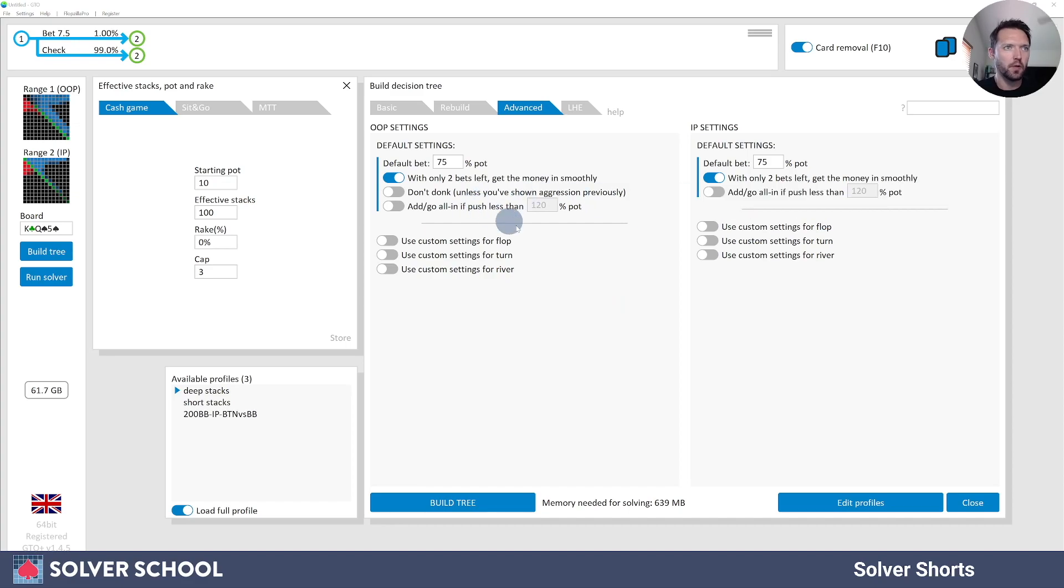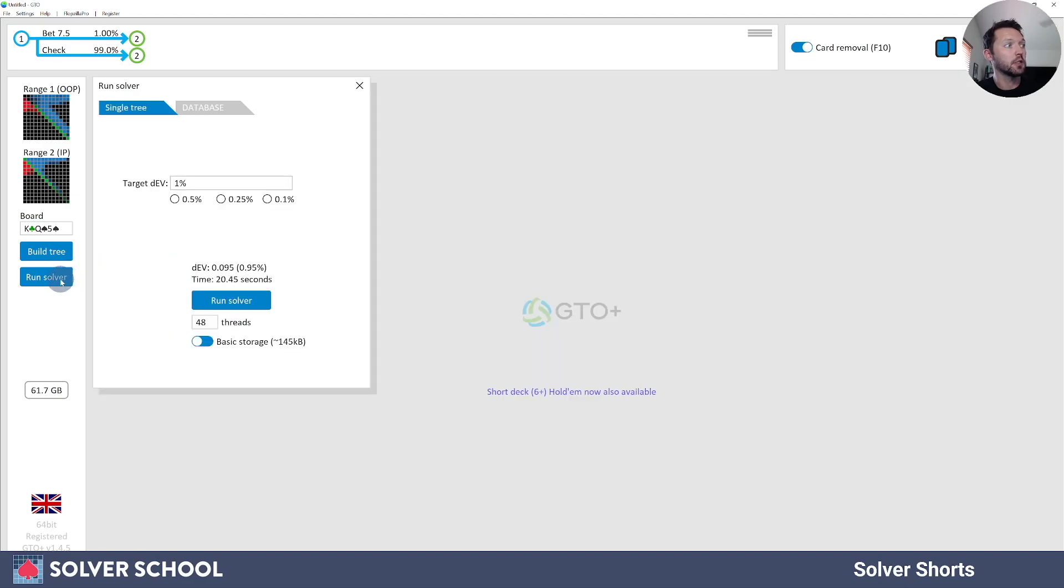I have different ranges in here as well, but when I'm comfortable with this and I actually want to solve this game tree, I can click Run Solver. That's when it's going to bring up this Target DEV.